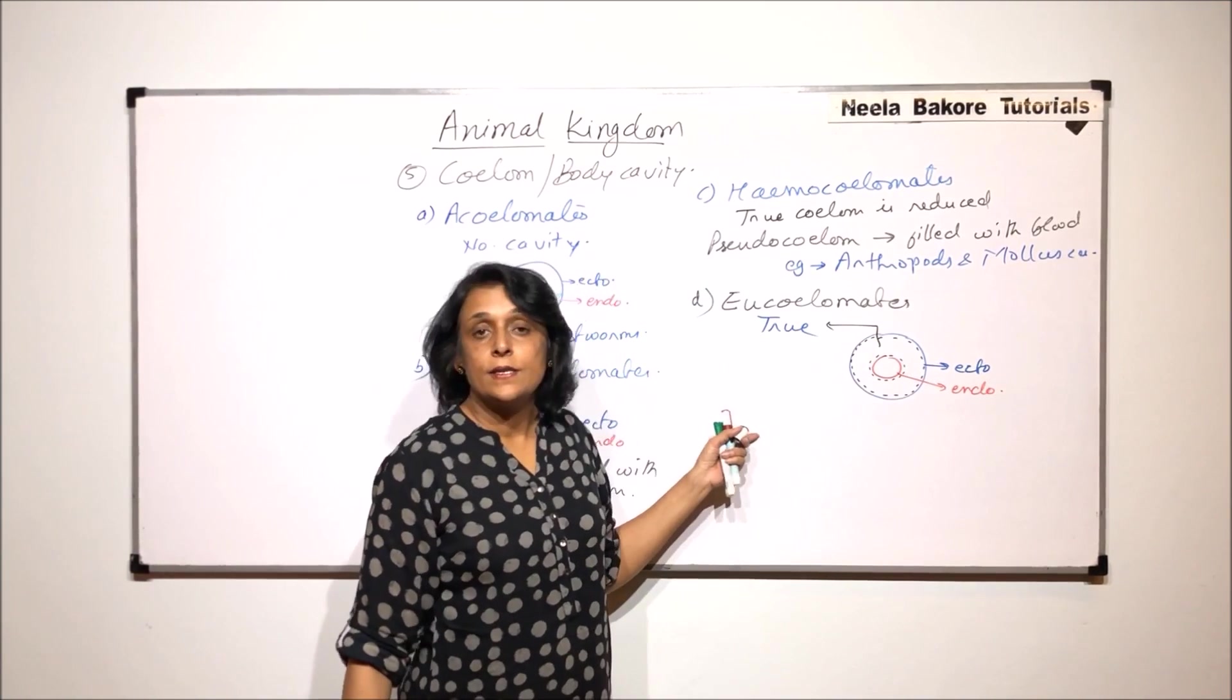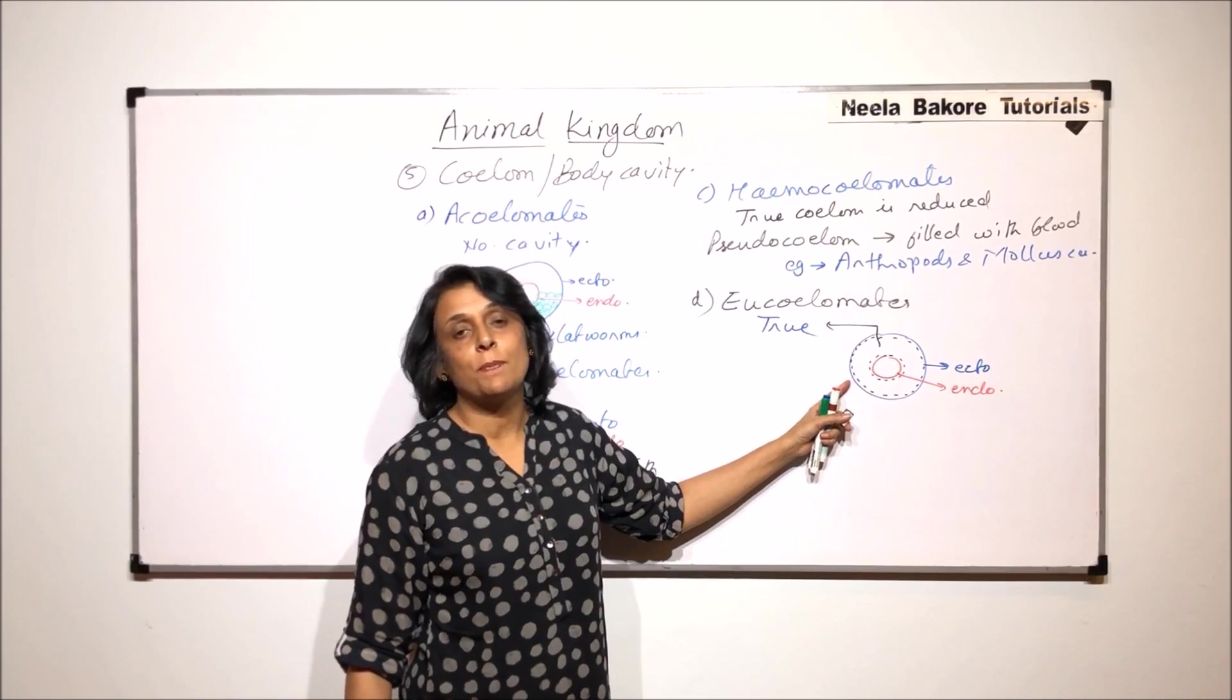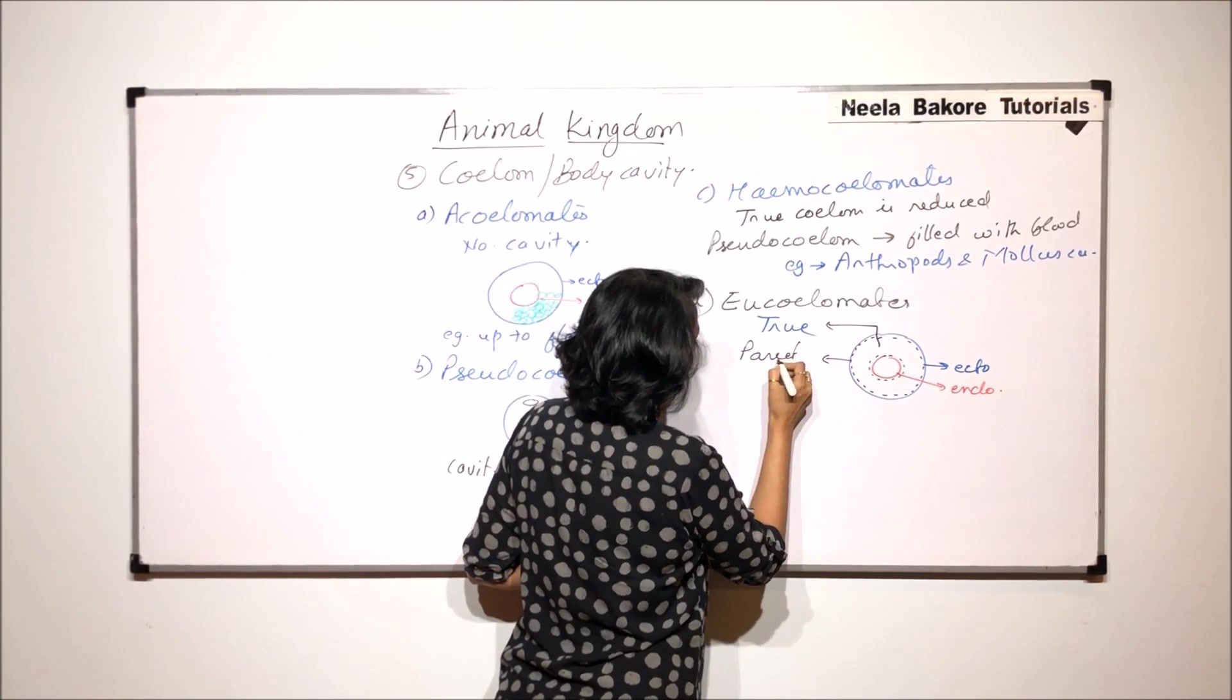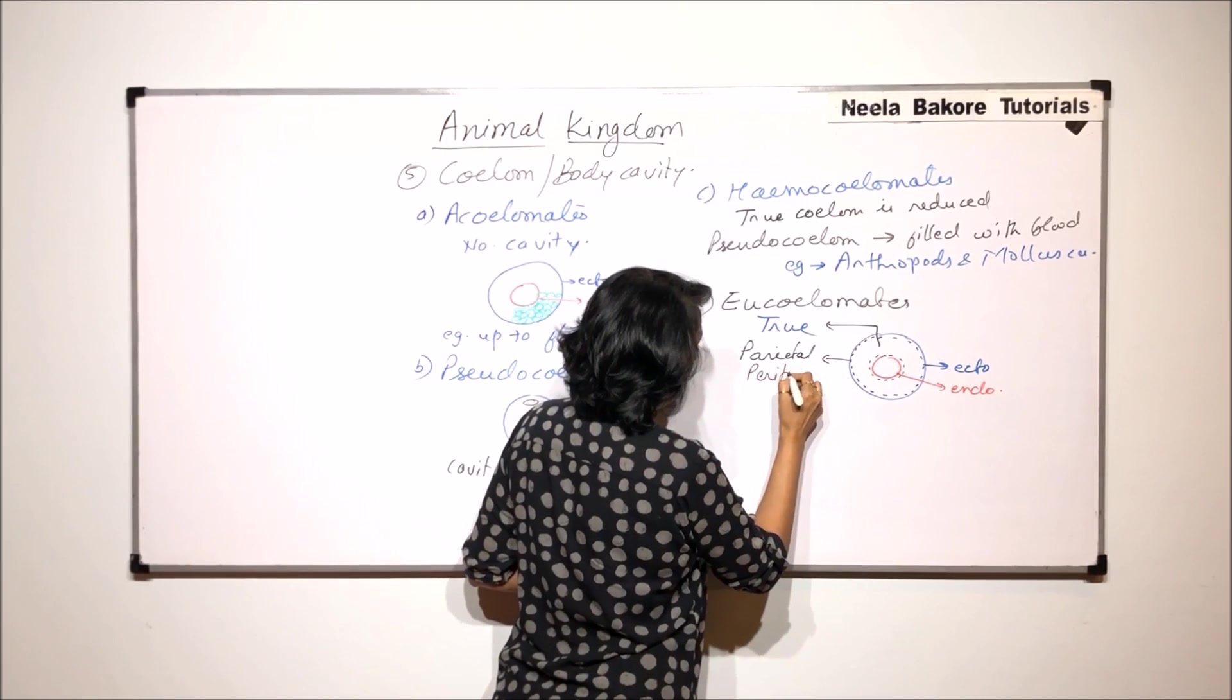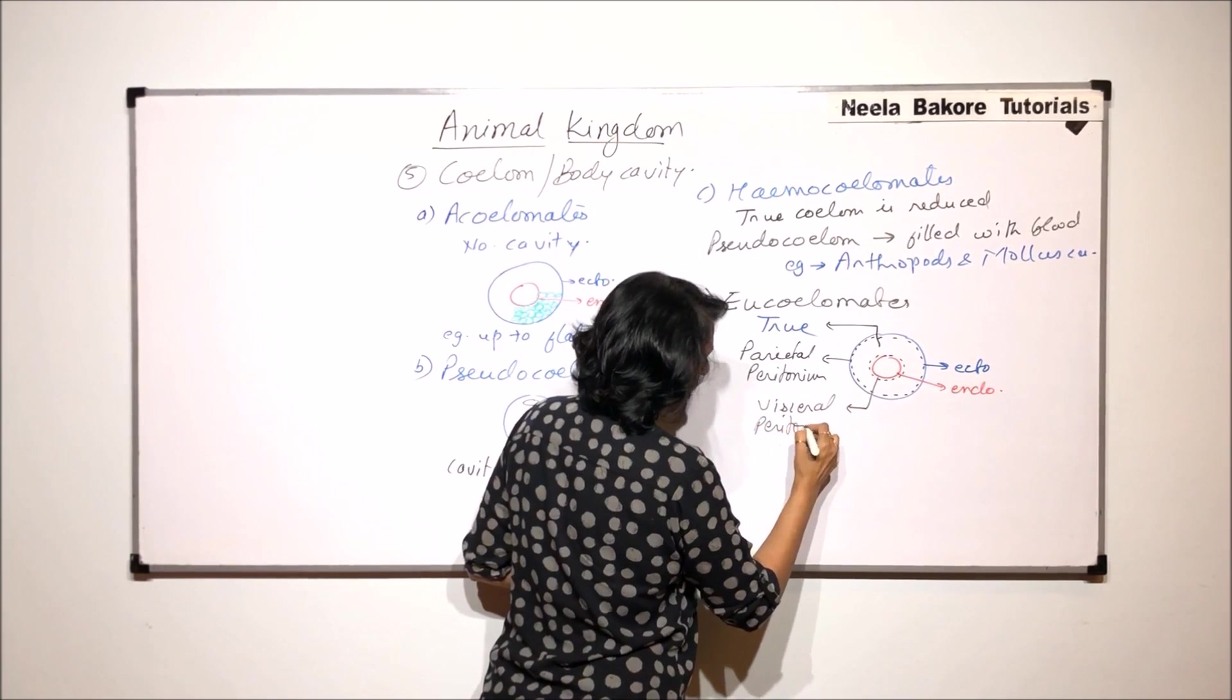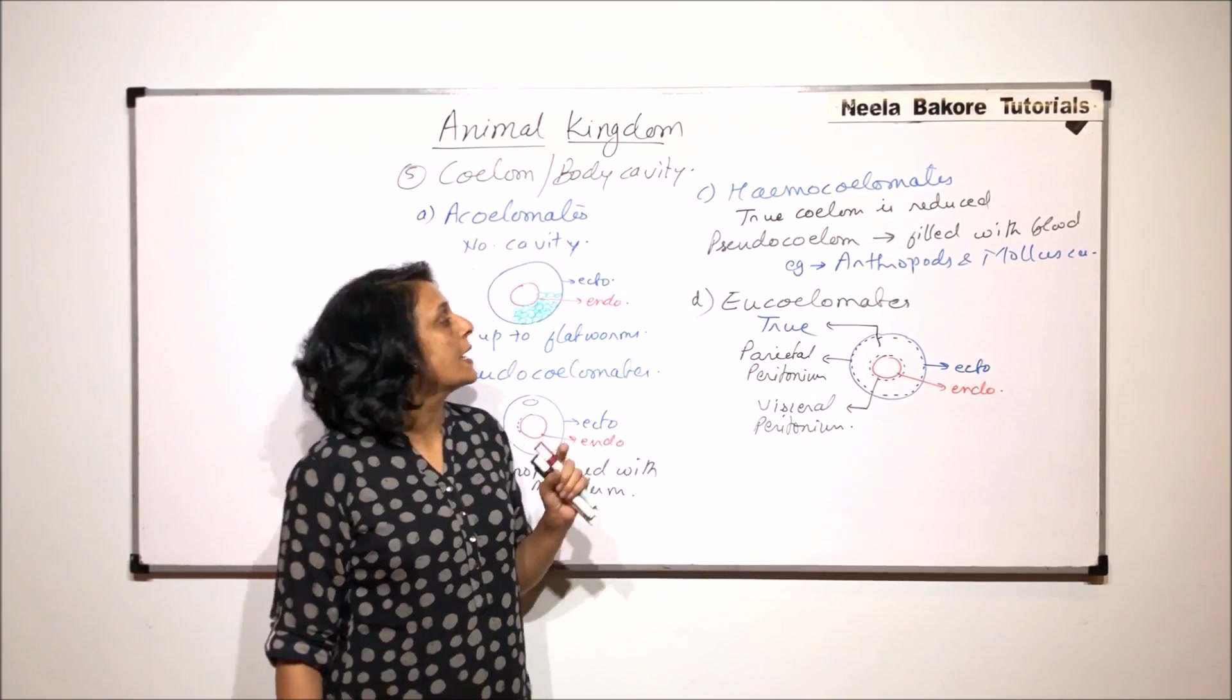And these two layers, the peritoneal layers, they are the mesodermal. So this is the outer one which is the parietal peritoneum and the inner one is known as visceral peritoneum. So this is the true coelom which is lined with mesoderm from all the sides.